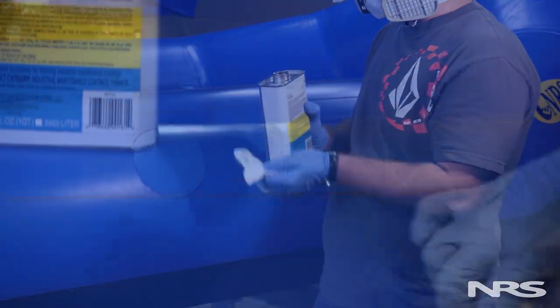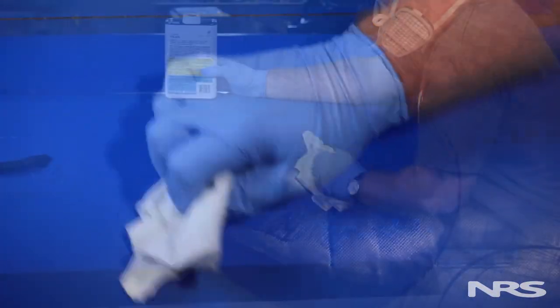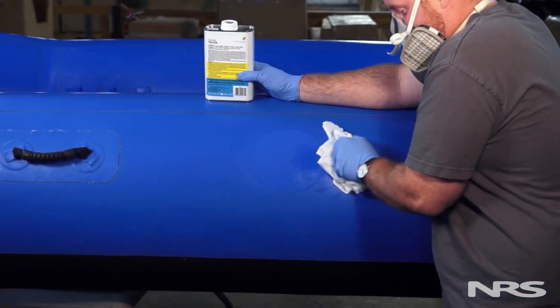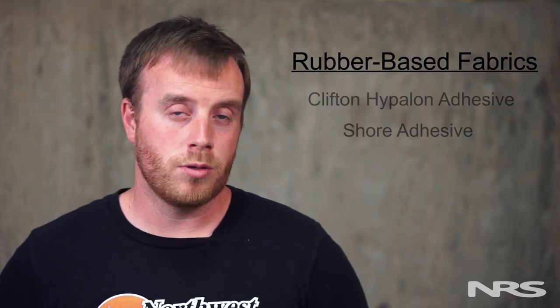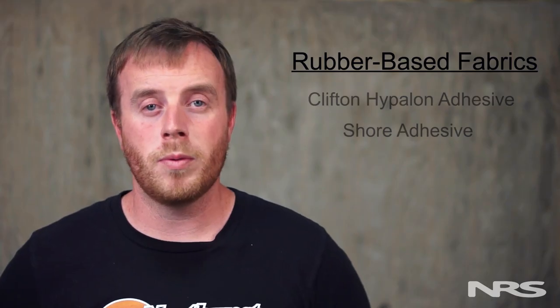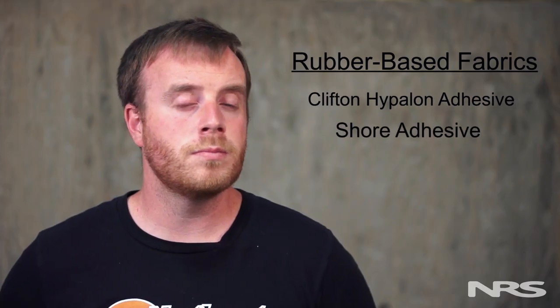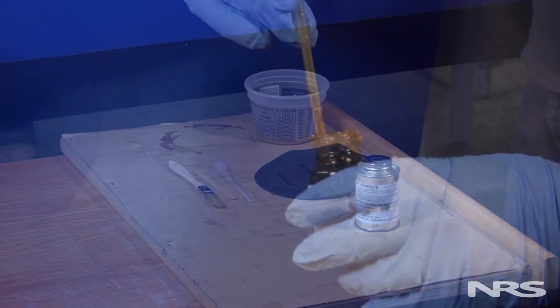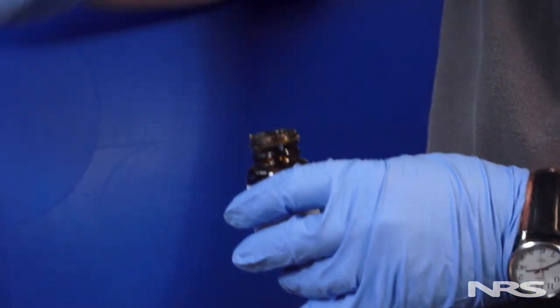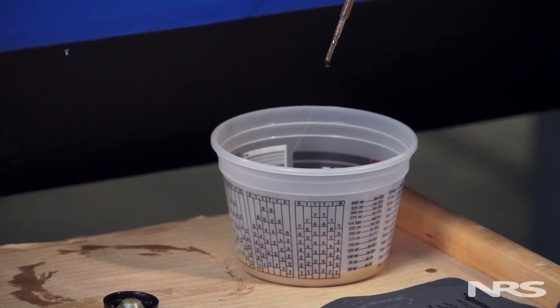The steps for the application stage depend on what type of glue you're using. Typically with rubber-based fabric, you'll want to use Clifton's Hypalon adhesive or Shore adhesive. Using Clifton's accelerant with Clifton's Hypalon adhesive will decrease the cure time while increasing the bond strength. We recommend using it with any air-holding patches, D-rings, or foot cups.